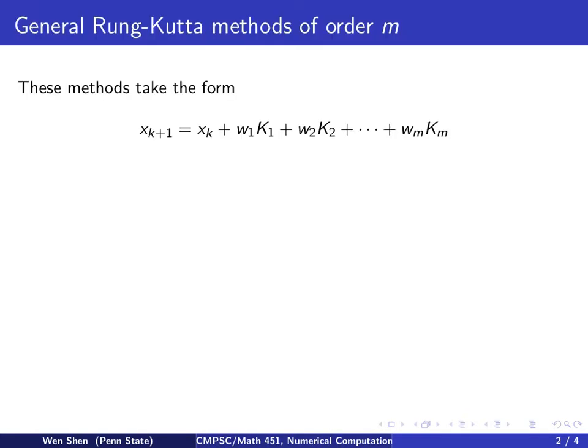We have already looked at two Runge-Kutta methods, one for the first order and the other for the second order. So one is Euler's method and the other is Hohen's method. And now we take a look at high order methods.